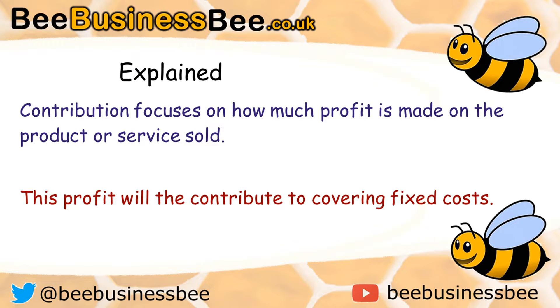On the break-even formula, the contribution part is the selling price minus the variable cost. That's why sometimes when you see the break-even formula, you'll see it as fixed cost divided by contribution.